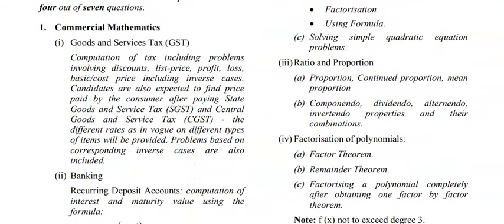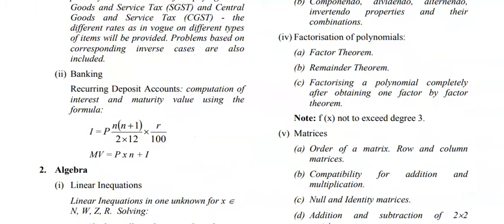In ratio and proportion, note there is no ratio topic — only proportion is given. You will study only those two proportion topics. In factorization of polynomials, you will cover factor theorem and remainder theorem, factorizing a polynomial completely after obtaining one factor by the factor theorem. Remember, f(x) must not exceed degree 3, so cubic polynomials are not included — they are excluded.